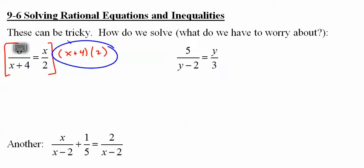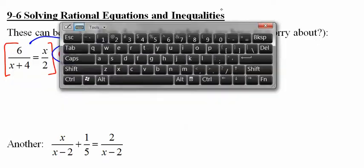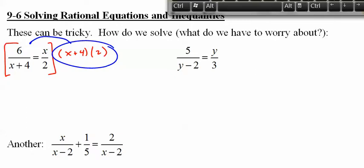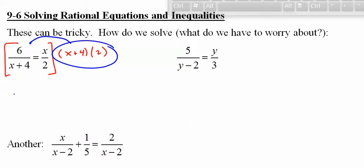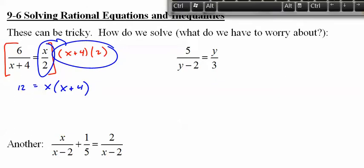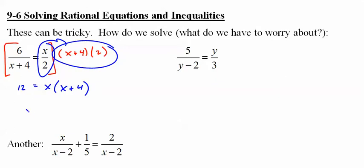When I multiply all of this by this, the twos cancel and I'm left with x times x plus 4. So now I have a quadratic which is fairly straightforward to solve.